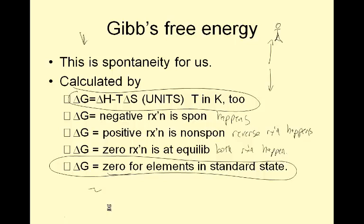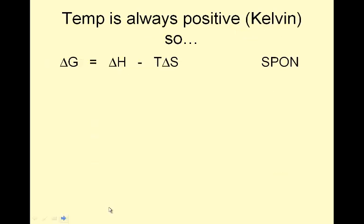Delta G is zero for elements in standard states — it's not like delta S for that. So let's look at a calculation or two. To be spontaneous, nature would like it to lose energy. The temperature is a Kelvin temperature so it's always positive, and nature favors disorder. So if I have a negative delta G, delta H would be negative minus T times delta S positive, and spontaneity would be always.